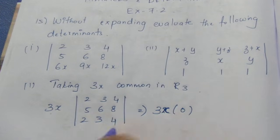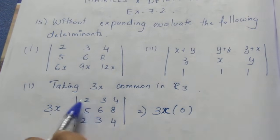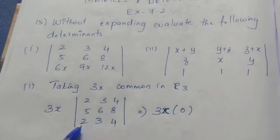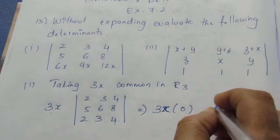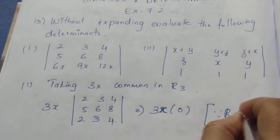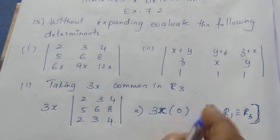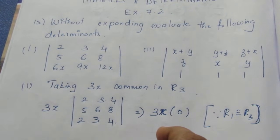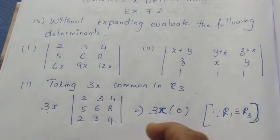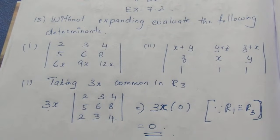Why is the determinant equal to 0? Because the first row and the last row have the same elements: 2, 3, 4 and 2, 3, 4. Row 1 is identical to row 3. When a determinant has two identical rows or columns, it equals 0. So the value is 0.